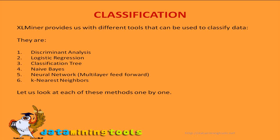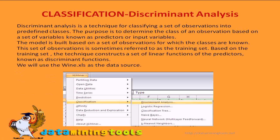Let us look at each of these methods one by one. Discriminant Analysis is a technique for classifying a set of observations into predefined classes. The purpose is to determine the class of an observation based on a set of variables known as predictors or input variables. The model is built based on a set of observations for which the classes are known. This set of observations is sometimes referred to as the training set.